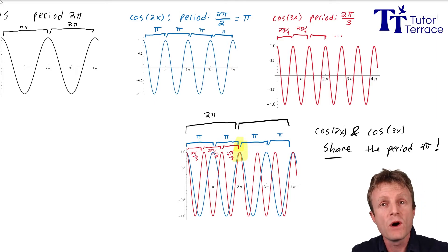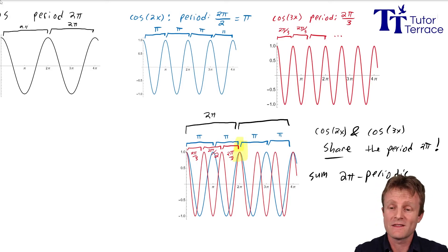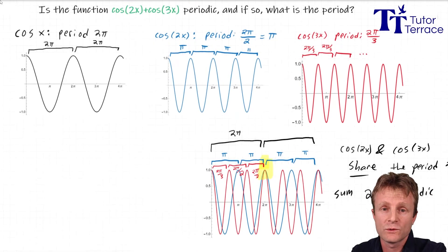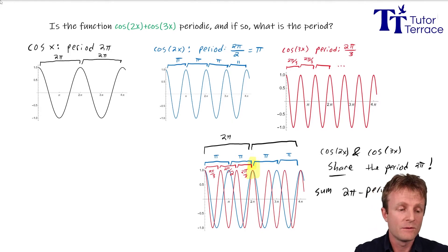They both repeat every 2π. And this observation is going to help us understand what happens when we add them together. Because if they both repeat every 2π, then the sum has to be 2π periodic. Both functions come back to the same value every 2π. So if we add them together, that function, the sum, which we wanted at the very beginning, cosine 2x plus cosine 3x, that has to have period 2π.